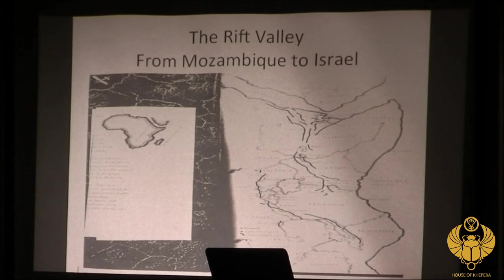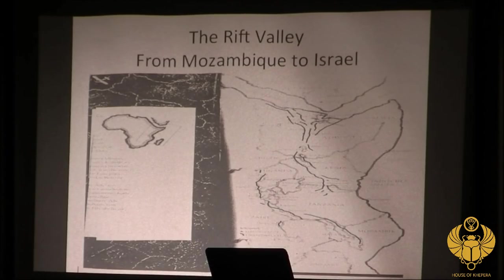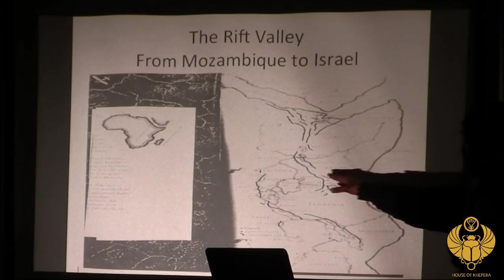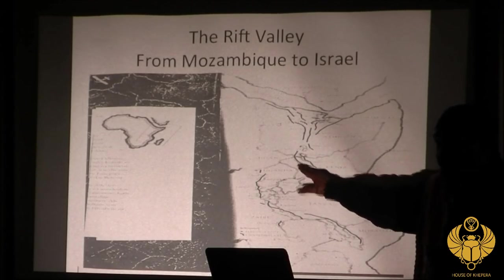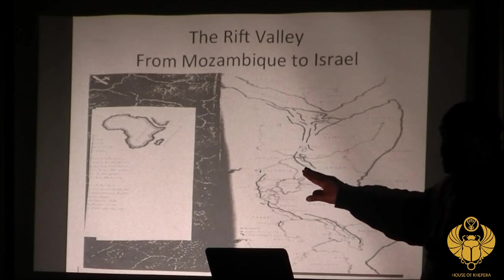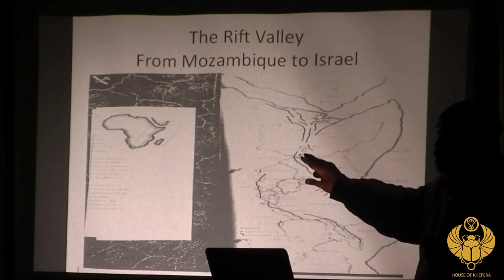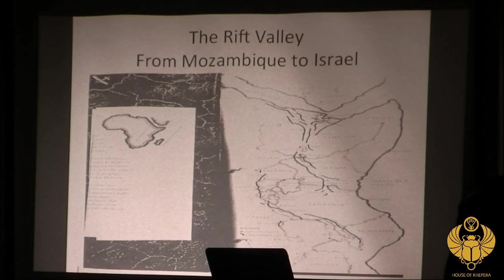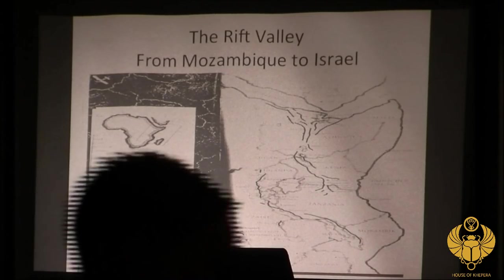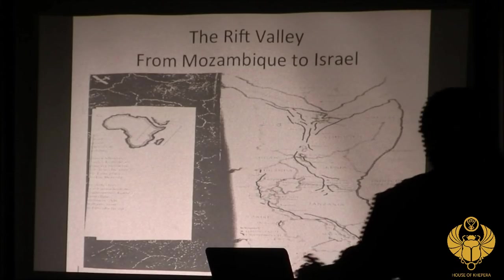Yesterday we called Israel Palestine. The day before yesterday, we called it Canaan, which is a black land. Inside of this Rift Valley, you have another valley called the Hoppy Valley, or the Nile Valley. Inside the Hoppy Valley, you have the Nile River, which is going to become a pathway for the family to be able to move.